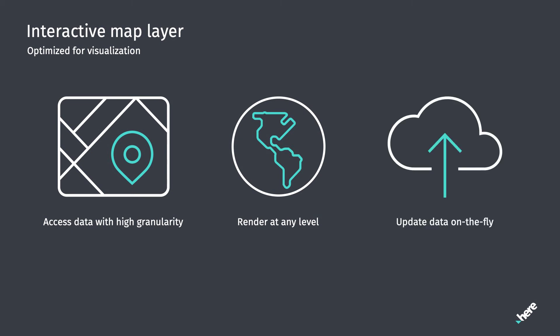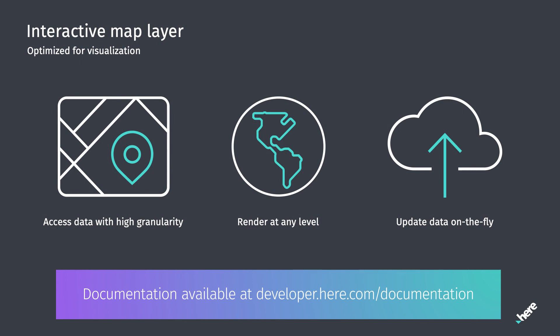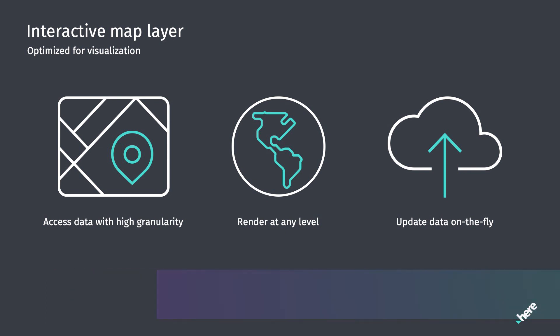These spatial search, map modification, and data sampling functions are just a few of the powerful tools which set interactive map layers apart from other layer types in the HERE platform. You can learn more about these layer types by reviewing interactive map layer documentation, available at developer.here.com/documentation.